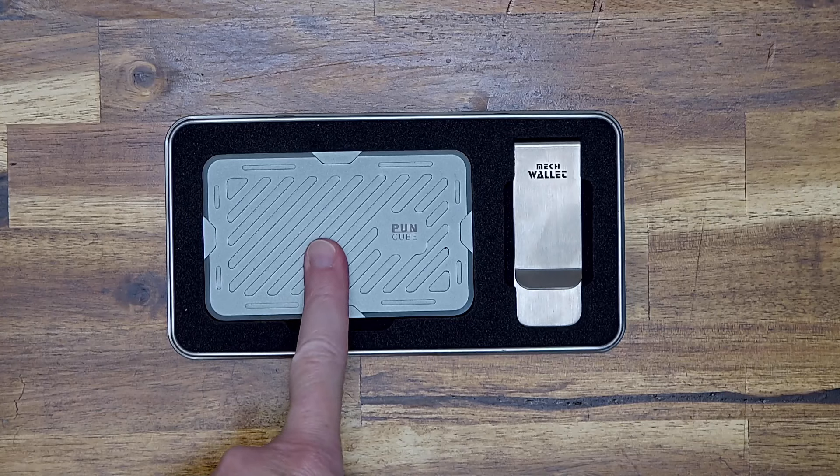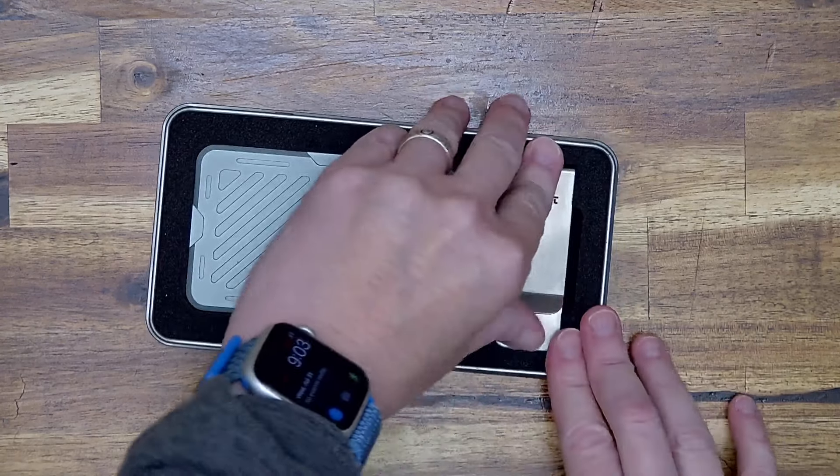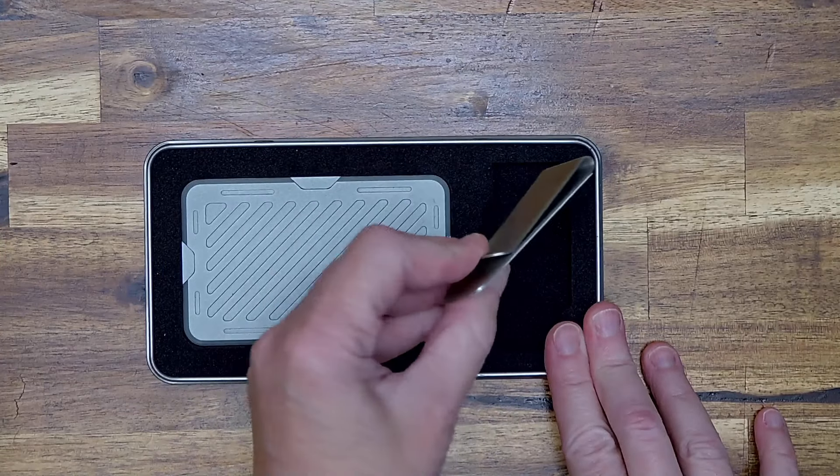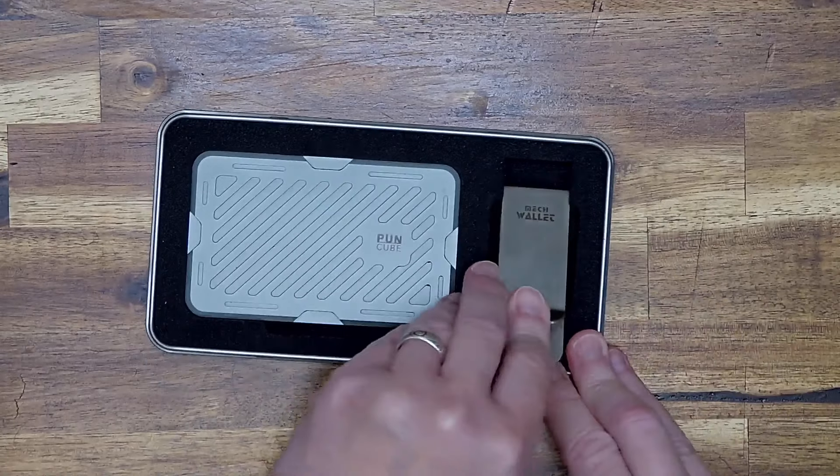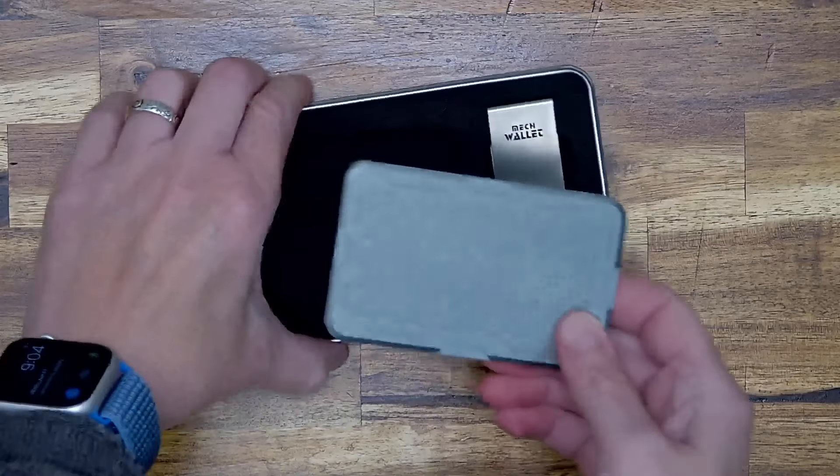What you get is a minimalist wallet and a cash clip or belt clip, whatever you want. I guess it's a cash clip that you can stick on. It's got an adhesive backing, but I'm not going to do that right now. I'm just going to tell you about this wallet.